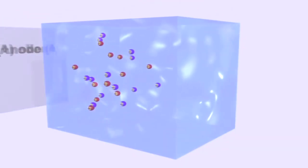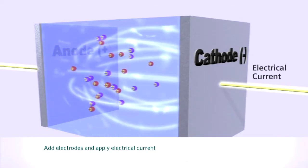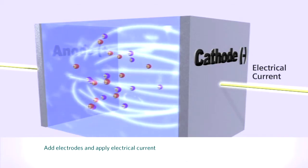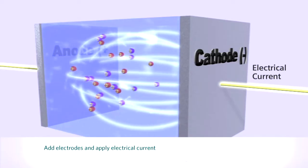When a pair of electrodes is inserted and an electrical current applied, the electric field drives the cations in the direction of the cathode, and at the same time drives the anions in the opposite direction toward the anode.